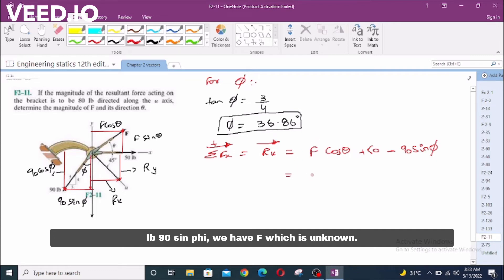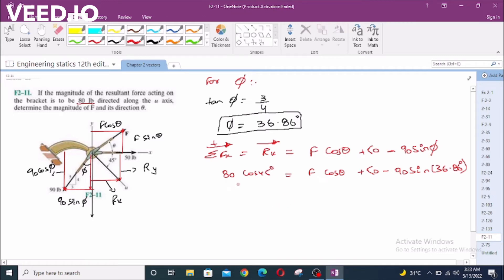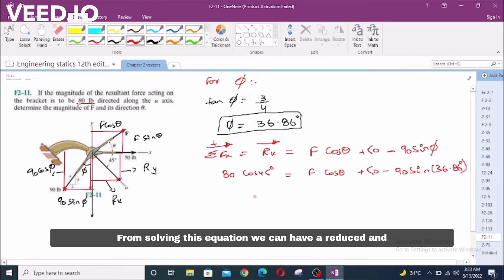We have F which is unknown right now. We have 50 minus 90 sin 36.86 degrees. Now Rx can be determined. We know that the resultant has magnitude 80 lb, so Rx equals 80 cos 45 degrees. From solving this equation, we can have a reduced and simplified form which is F cos theta equals 60.56. Let's call this equation A.